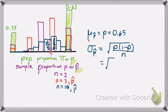So, in this particular case, it's your probability of success, 0.65, times your probability of failure, 0.35, divided by your sample size, and in this case, a sample of size 10.